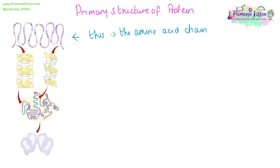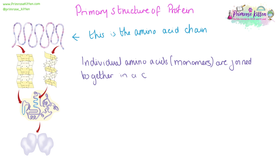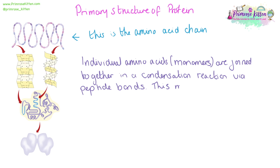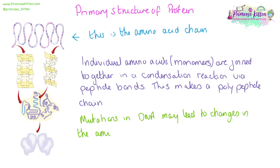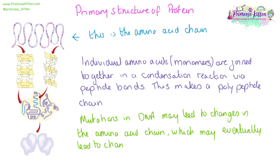The primary structure of our protein is the amino acid chain. Individual amino acids — the monomers — are joined together in a condensation reaction, linking them via a peptide bond. This will make a polypeptide chain. Any mutations in DNA may lead to changes in the amino acid chain, which may eventually lead to a change in the structure — the final overall quaternary structure of the protein — and subsequently how the protein functions.